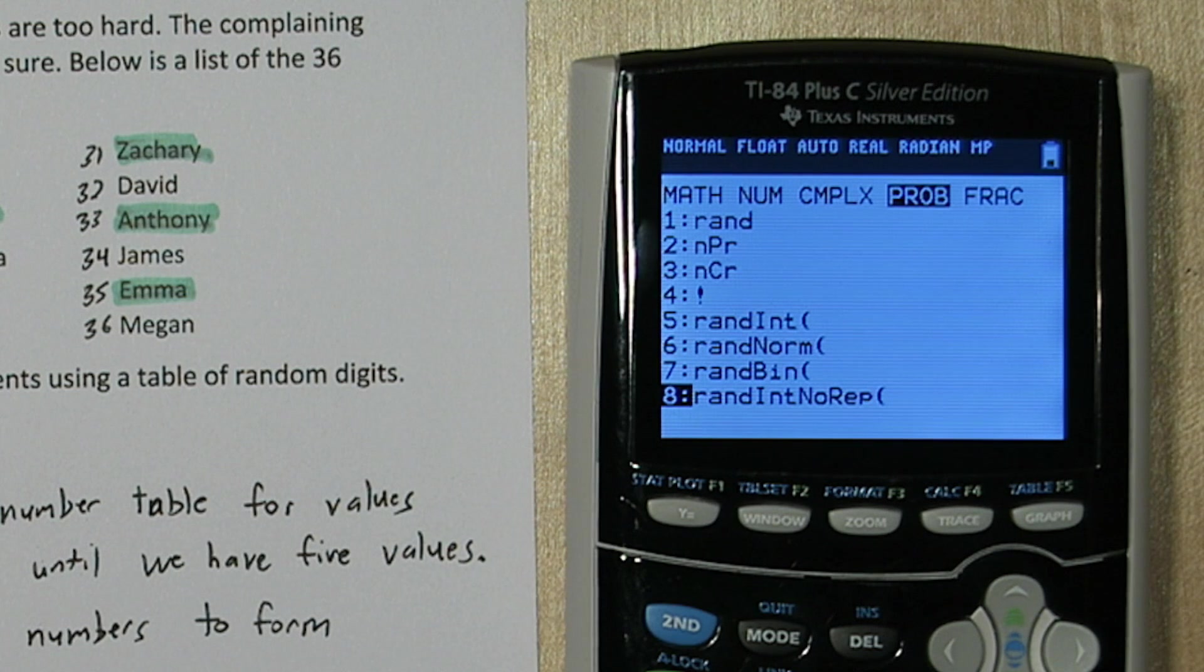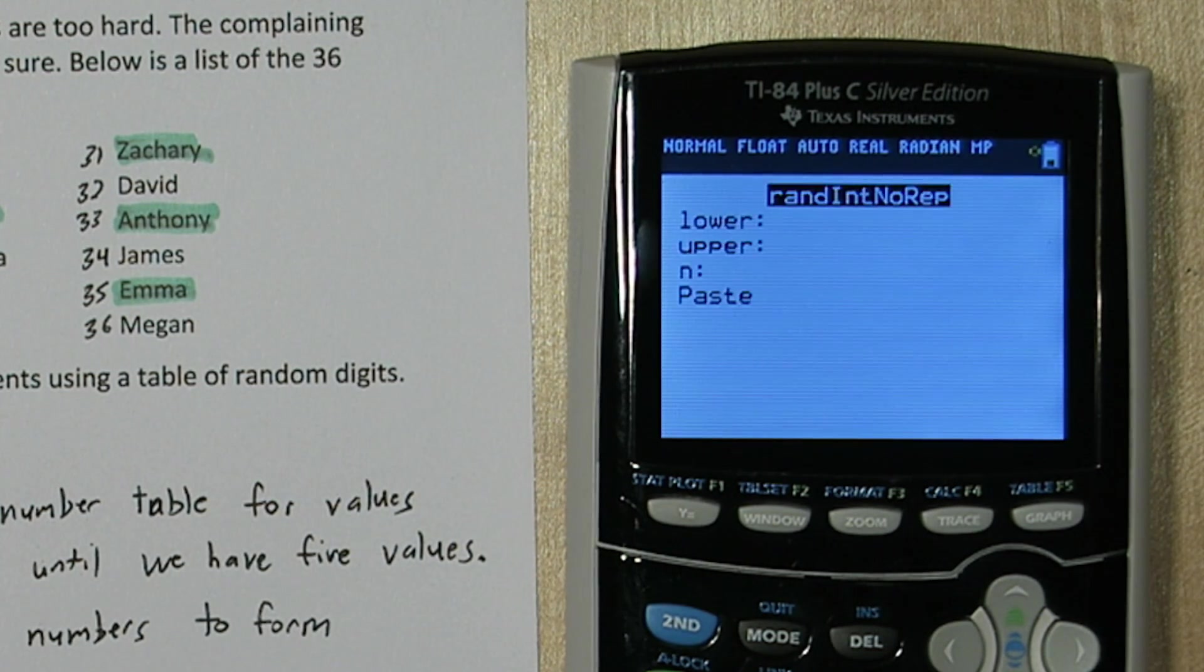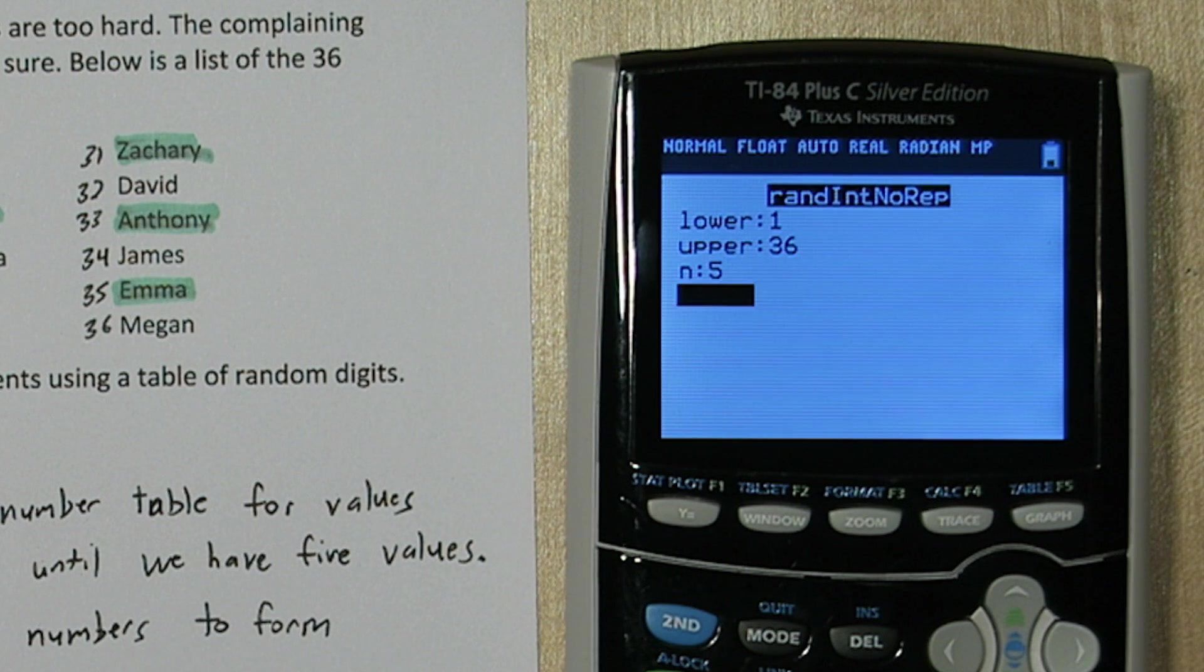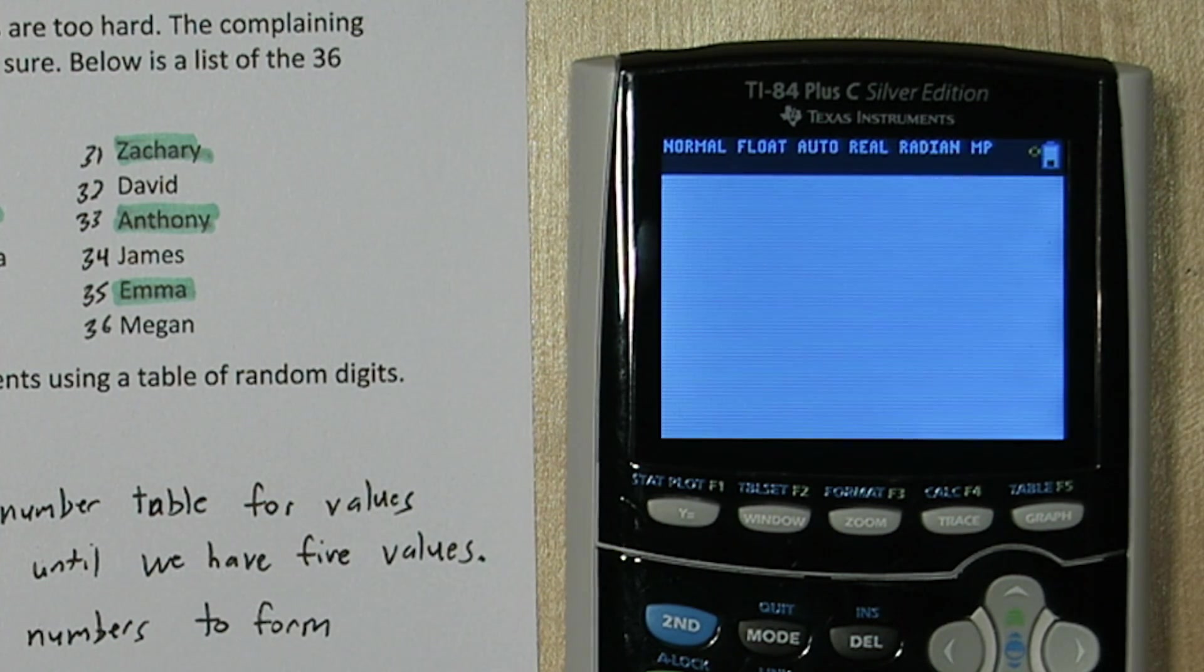Now, if you have a newer calculator, it will have this option RAND INT NO REPEAT. So I'm going to say start at 1 and go up to 36 and select 5 numbers. And the neat thing about this is it won't pick any numbers that repeat. So when I press paste and then enter,